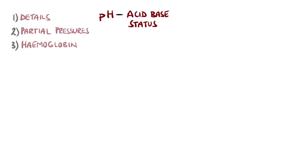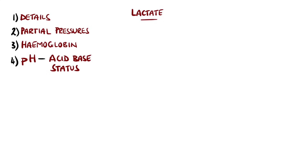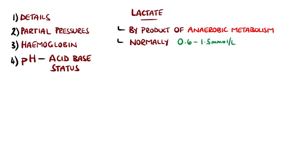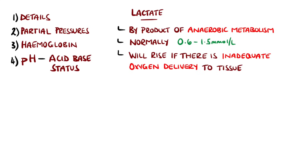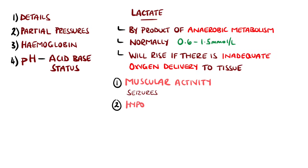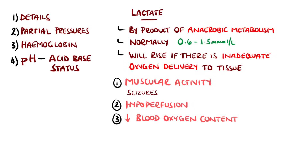Lactate itself is an extremely useful marker, as it is a byproduct of anaerobic metabolism. Some is produced normally in the body and excreted mostly through the liver and kidney. However, lactate can act as a marker for underlying disease, typically as a result of inadequate oxygen delivery to tissues, meaning they need to use more anaerobic metabolism than normal. Examples include muscular activity, for example in seizures where there is anaerobic muscular activity, hypoperfusion of tissues especially in sepsis, or not enough oxygen in the blood being delivered to the tissues, for example hypoxaemia or anaemia.